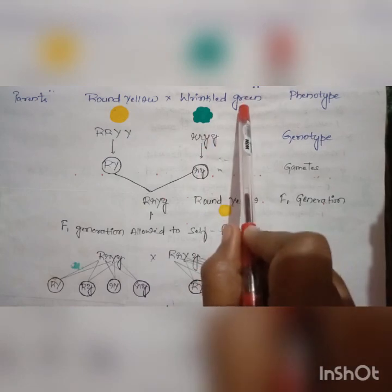According to Mendel, each trait of an organism is controlled or determined by a pair of factors or genes called alleles. Round is going to be influenced by two factors: capital R and capital R. In the same way, yellow is capital Y capital Y. For wrinkled green, small r small r for wrinkled seed, and small y small y for green colored seed.